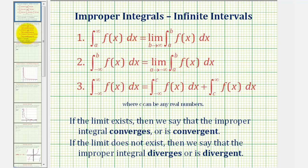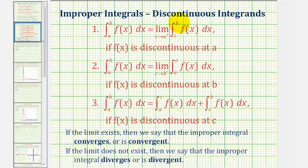But for our two examples, our improper integrals have discontinuous integrands on the interval of integration. This means our function f(x) will be either discontinuous at a, the lower limit of integration, or at b, the upper limit of integration. So if the integrand is discontinuous at a, the lower limit of integration, we can write the integral as the limit as c approaches a from the right side of the integral from c to b.